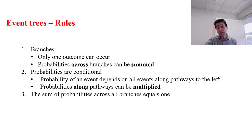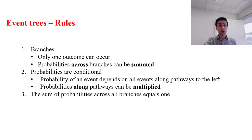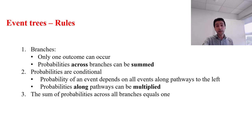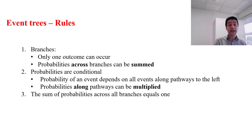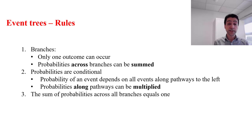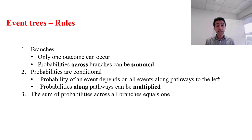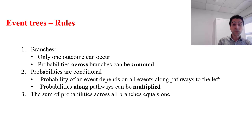There are important rules to consider when creating event trees. For branches, only one outcome can occur on a single branch, and the probabilities across branches can be assigned accordingly. The second rule focuses on the conditional nature of probabilities: the chance for an event depends on all events on the pathway to the left of it, and we can multiply probabilities along paths. The third rule is that the sum of probabilities across all branches always equals one.